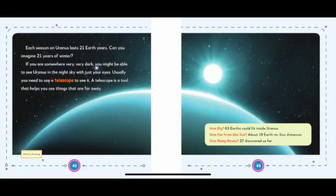Each season on Uranus lasts twenty-one Earth years. Can you imagine twenty-one years of winter? If you are somewhere very, very dark, you might be able to see Uranus in the night sky with just your eyes. Usually, you need to use a telescope to see it. A telescope is a tool that helps you see things that are far away.